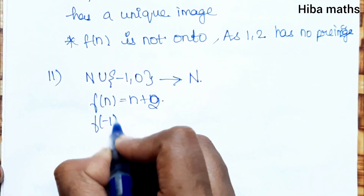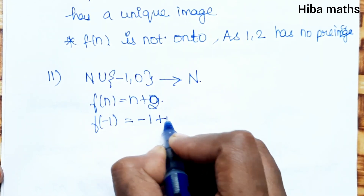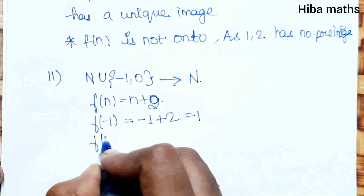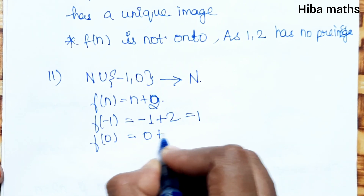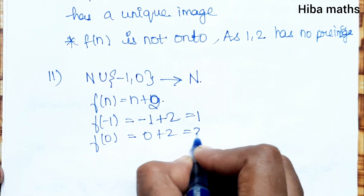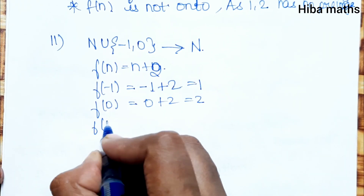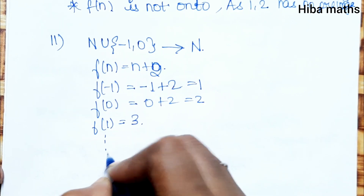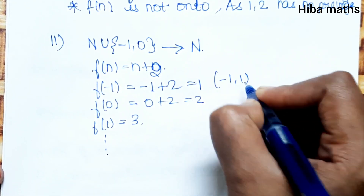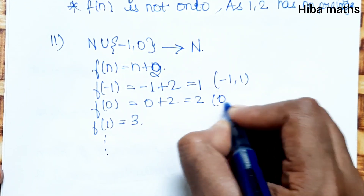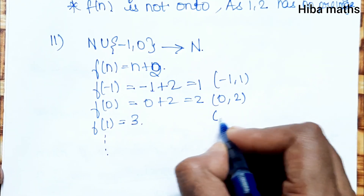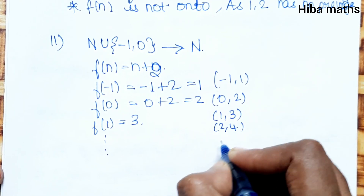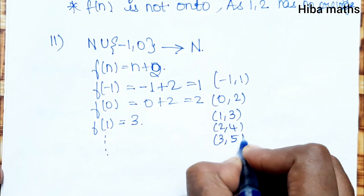f(-1) = -1 + 2 = 1. f(0) = 0 + 2 = 2. f(1) = 1 + 2 = 3, and so on. So the pairs are: -1 maps to 1, 0 maps to 2, 1 maps to 3, 2 maps to 4, 3 maps to 5.